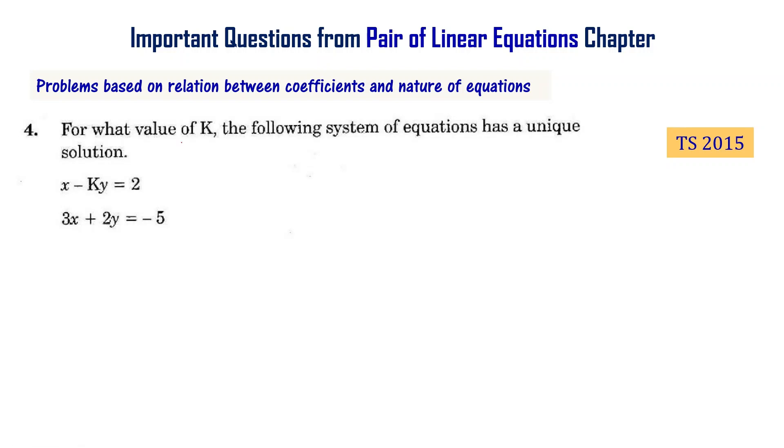For what value of k does the following system of equations have a unique solution: x minus ky equal to 2 and 3x plus 2y equal to minus 5. This question is from the Telangana final exam 2015. In this video I am going to show how to solve this kind of problem.